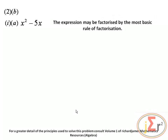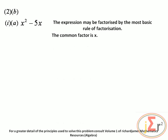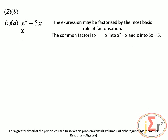We are required to factorize this expression using the most basic rule of factorization. The common factor is x. Take the common factor and divide each term by it. x can go into x squared giving x, and x into negative 5x giving negative 5. So we have x(x minus 5).